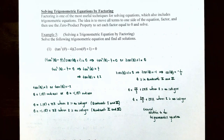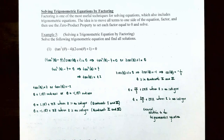Factoring is actually one of the most useful techniques in solving equations, and that's also true for solving trigonometric equations. The idea is to move all the terms to one side of the equation, factor, and then use what's called the zero product property to set each of the factors equal to zero, and then you can solve the resulting equations.